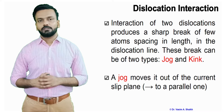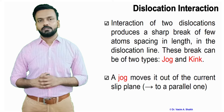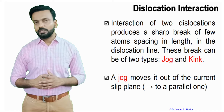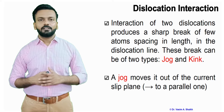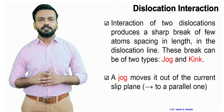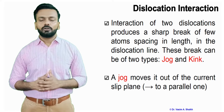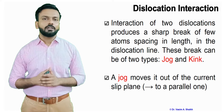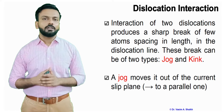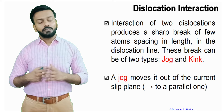The next topic is dislocation interaction — how dislocations interact when they pass through each other. There are two scenarios. Interaction of two dislocations produces a sharp break of a few atom spacings in length in the dislocation line. These breaks can be of two types: a jog or a kink. Jog or kink is formed when dislocations interact, and this is known as a defect in a defect — since edge and screw dislocations are already defects, a jog and kink is a type of defect within them.